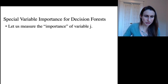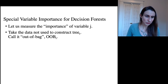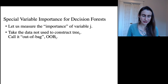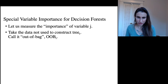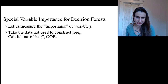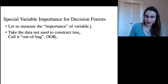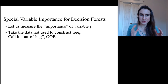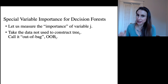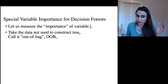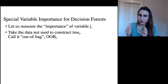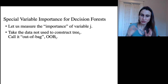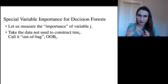We're going to measure the importance of variable j. The way we'll do it is we start with the data that wasn't used to construct tree t. Because tree t, at iteration t, was constructed from a bootstrap sample. So there are data in the training set that are not in that bootstrap sample — you call that data out-of-bag, so out-of-bag for iteration t.